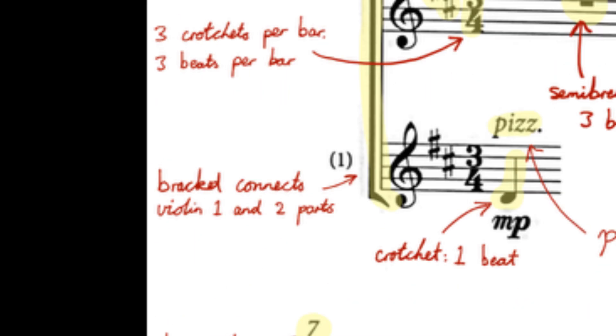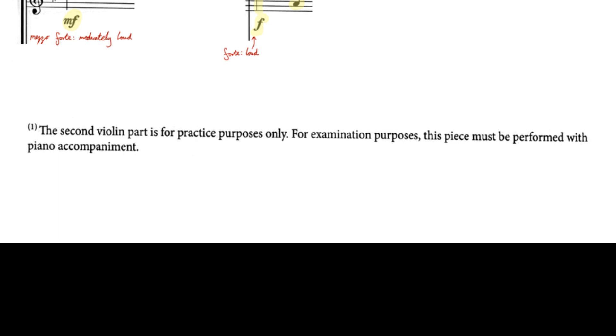This score features both violin one and violin two parts connected with a bracket. While you are required to play with piano accompaniment for an exam, this gives you the option of performing or practicing as a violin duet with a friend or teacher.